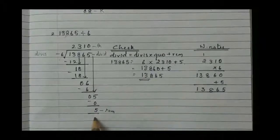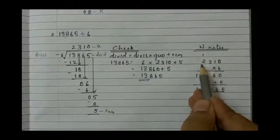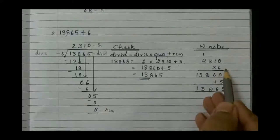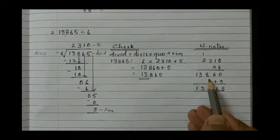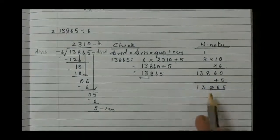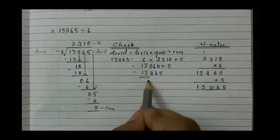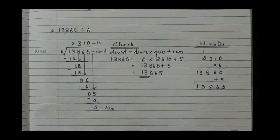Plus remainder. Remainder is 5, write down 5. Go for the working note beside 2310. Multiply it by 6, you will get 13,860. Add 5 remainder.